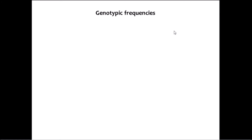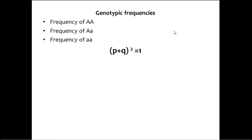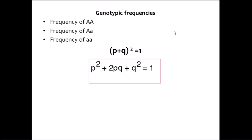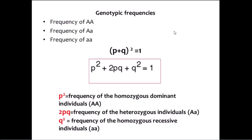The second equation is for determining the genotypic frequencies of the population — that is, the frequency of homozygous dominant AA, the frequency of heterozygous individuals Aa, and the frequency of homozygous recessive aa. The genotypic frequency can be calculated using the equation (p + q)² = 1, or in other words, p² + 2pq + q² = 1. Here, p² is the frequency of homozygous dominant individuals, 2pq is the frequency of heterozygous individuals, and q² is the frequency of homozygous recessive individuals.